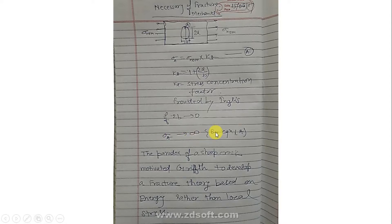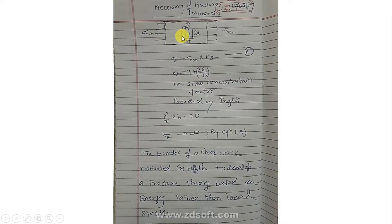So Sigma_A tends to infinity by this equation. What I want to convey here is: when the elliptical geometry is converted into a sharp crack — when 2b becomes zero, the distance between the two sides is zero — the complete elliptical hole becomes a sharp crack, and the stress at a sharp crack according to solid mechanics is infinite.